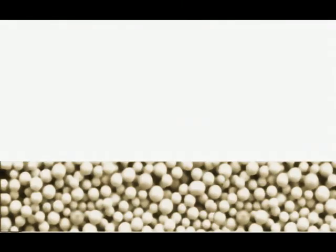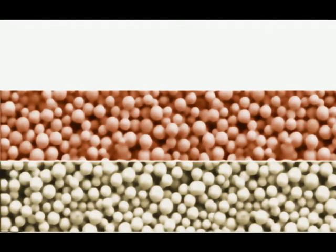The exchanger resin turns from light grey to red-brown in the case of ferrous, or blue in the case of copper ions.